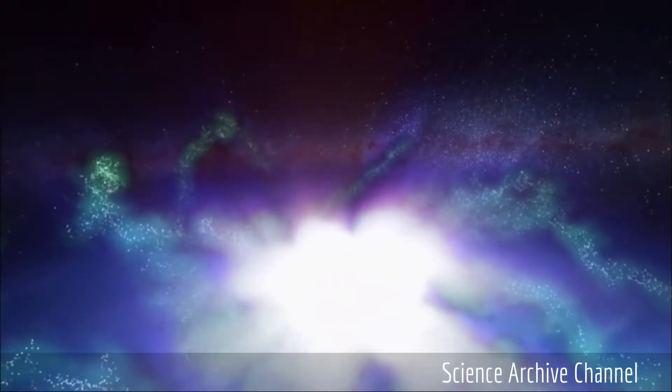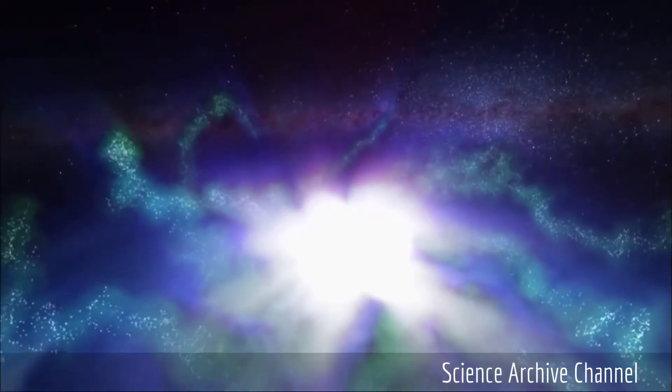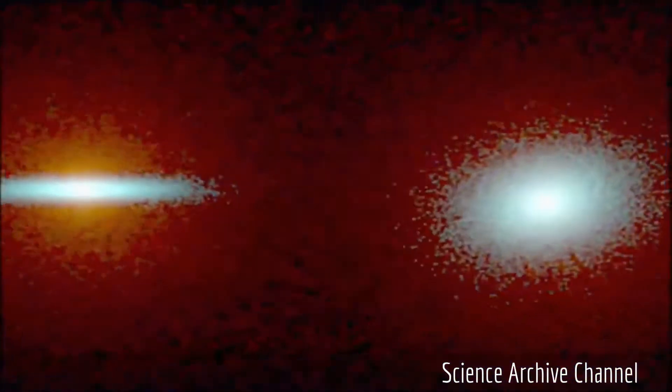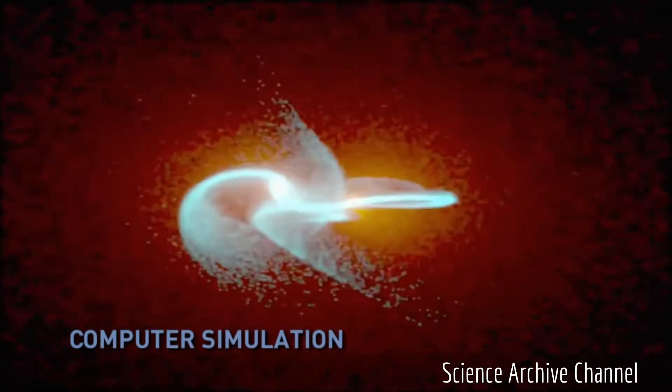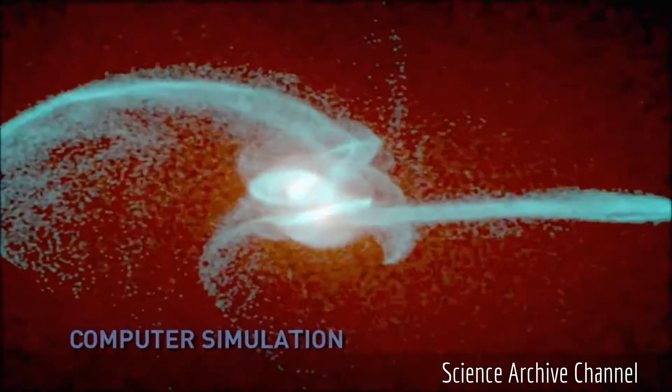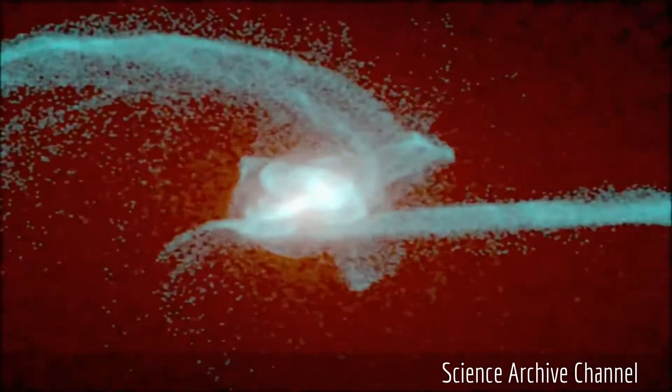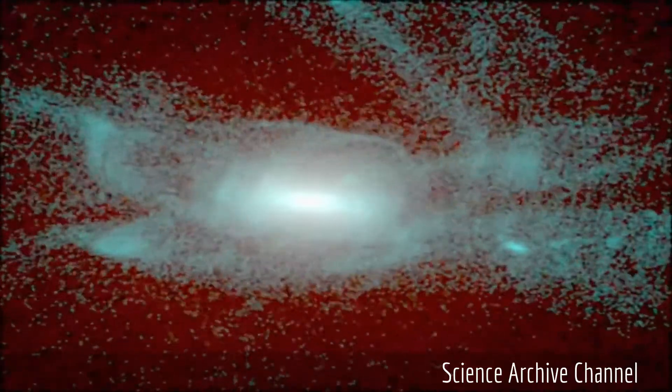Our own galaxy, the Milky Way, is moving toward our neighbor, Andromeda. Both galaxies are spiral in shape, but Andromeda is about twice as massive, with a supermassive black hole the mass of 30 million suns.